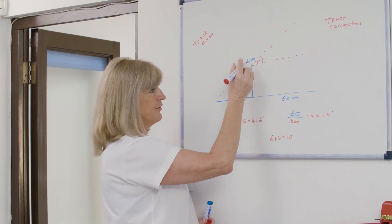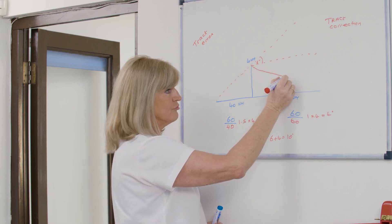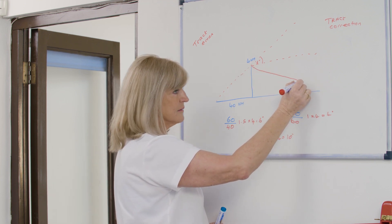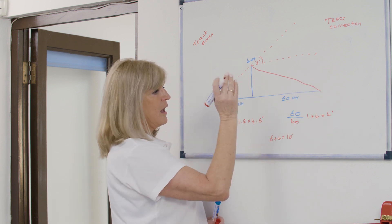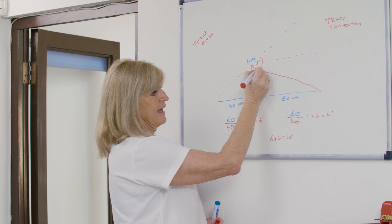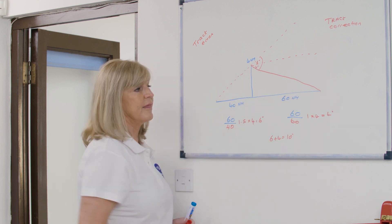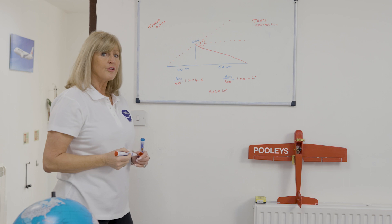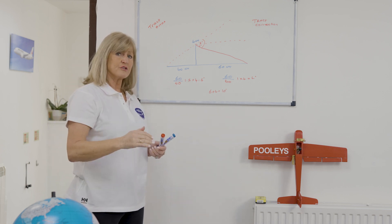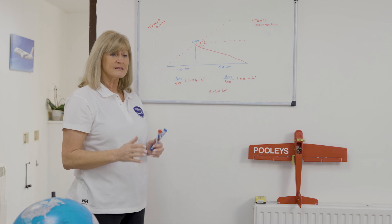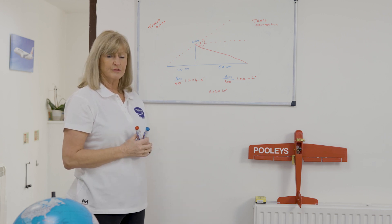If you now add the two together, 6 plus 4 equals 10. If I now turn my aircraft 10 degrees to the right — and make sure you're going right, because you might find it says left as well — I am now correcting for that angle and I will end up back on track. So that is the 1 in 60 rule. Now just stop, have a little practice, and give yourself different ones to work out.